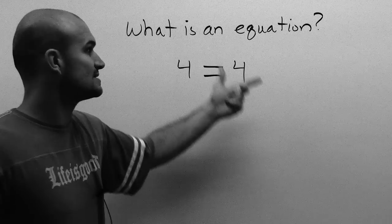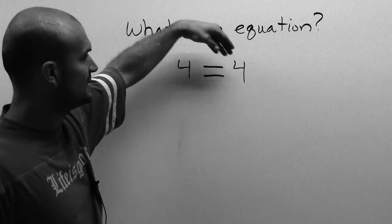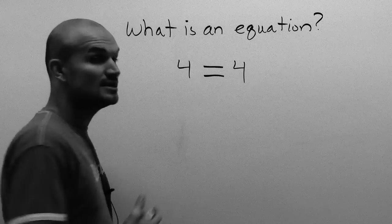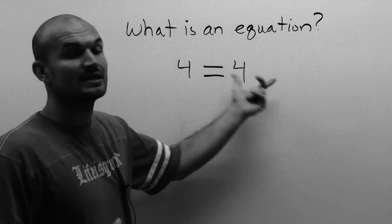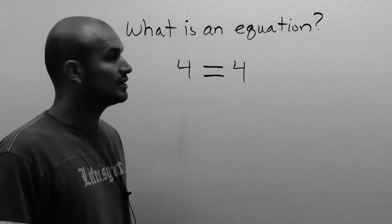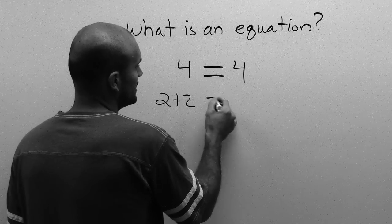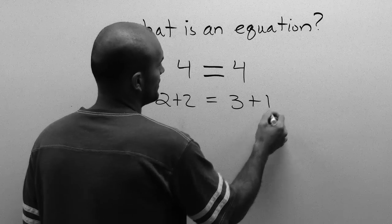That's all an equation is, just a sentence where we have that equal sign. Now, sometimes we can represent what's on the left and right side of an equation differently. For instance, I could say two plus two is equal to three plus one.